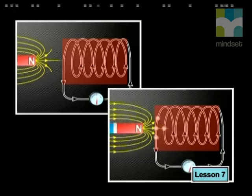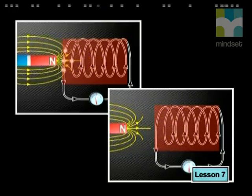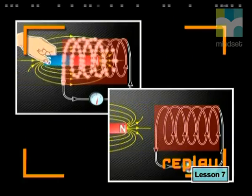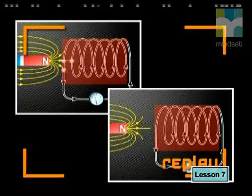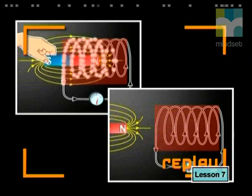If we move the same magnet faster in the coil, the change in magnetic flux will be the same as when the magnet moves slowly, but the time taken for this change will be less, and so the rate of change will be greater. This confirms that the speed at which the magnet moves affects the induced EMF. Therefore, the induced EMF is inversely proportional to the time in which the magnet moves.